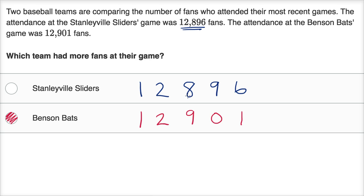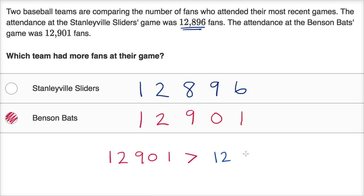So Benson Bats has more fans than Stanleyville Sliders. I could write this as 12,901 is greater than 12,896. I always remember the greater-than sign by saying it opens toward the larger value, so 12,901 is greater than 12,896.